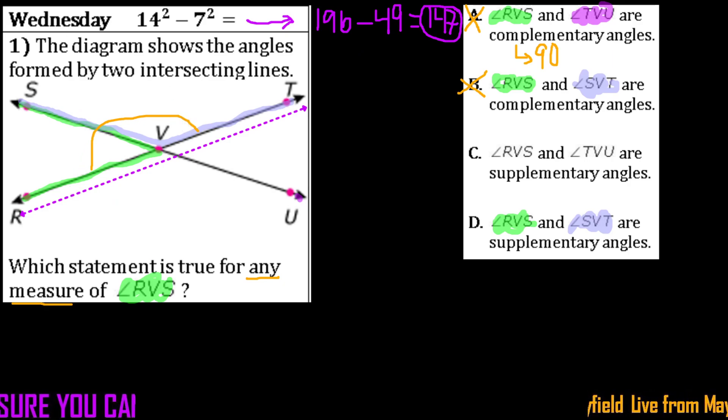So we're going to say for this one, supplementary angles mean their sum is 180. And so since these two angles added together is 180, we would know that that is true.